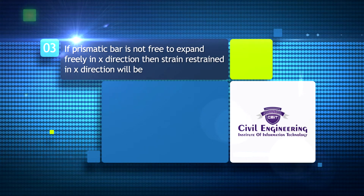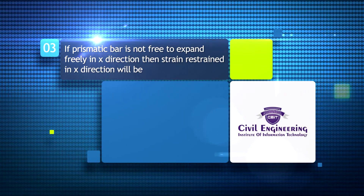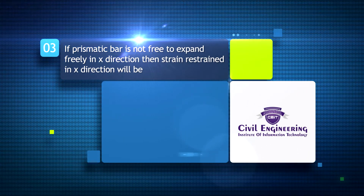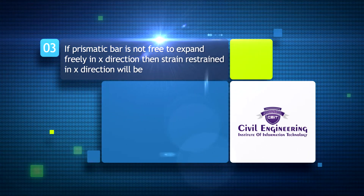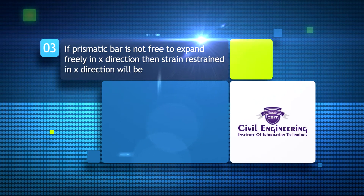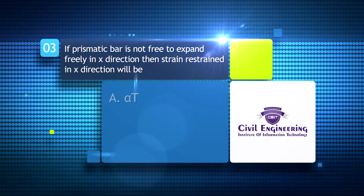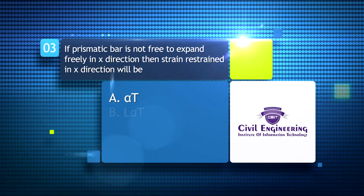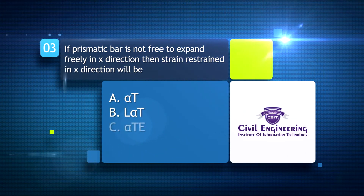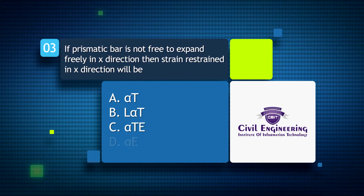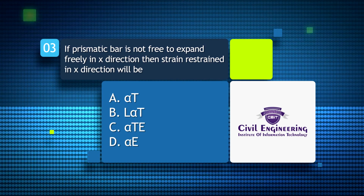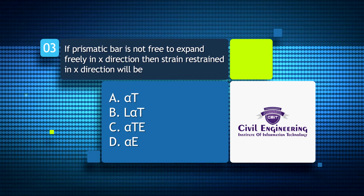If a prismatic bar is not free to expand in the x-direction, then the strain restrained in the x-direction will be: A) αT, B) L·αT, C) αT·A, D) α·E.